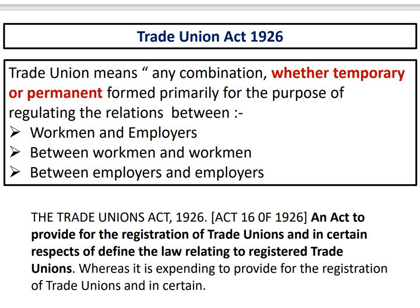We start with the second part of Trade Union — Trade Union Act 1926. Trade Union means any combination, whether temporary or permanent, formed for the purpose of regulating the relation between workman and employer, between workman and workman, and between employer and employer. I have already explained this in Part 1.